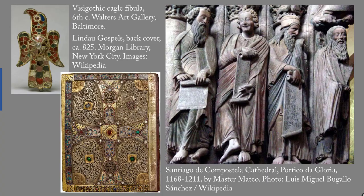We start with characteristic examples of medieval sculpture. On the left is a Visigothic eagle fibula — that means it's a sort of safety pin — and it dates to the 6th century. In the center is the back cover of the Lindau Gospels, dating to circa 825, made of gold with gems. On the right is the Portico de Gloria from the Santiago de Compostela Cathedral in Spain, dating to 1168 to 1211. We actually have a name attached to this one: Master Matteo.